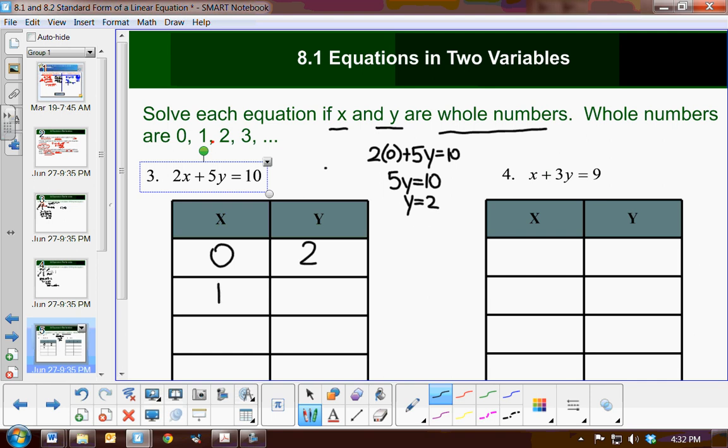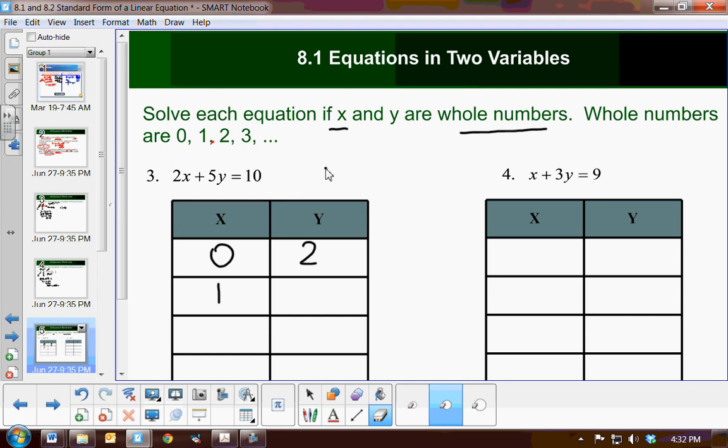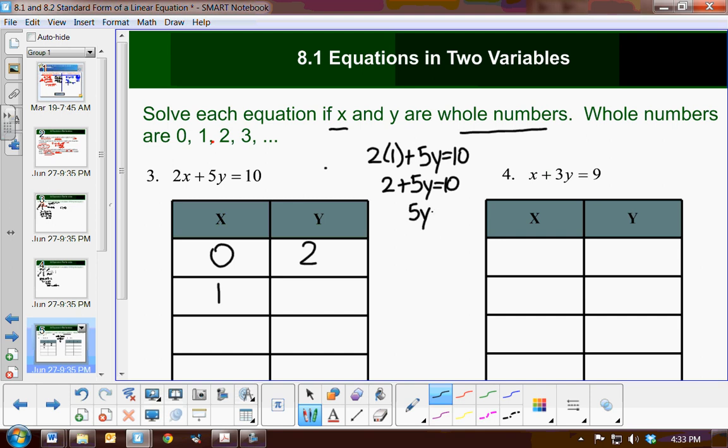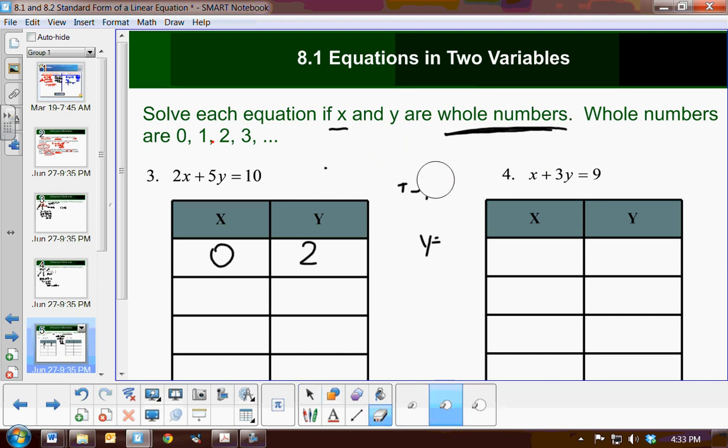Now let's check the next whole number, 1. Give myself some room to work. So now we have 2 times 1 plus 5 times y equals 10. Well, we have 2 plus 5y equals 10. Subtract 2 from both sides. 5y equals 8. But when I divide by 5, I get 8/5 for the value of y. Now, according to this direction, I want to find when x and y are whole numbers. 8/5 is not a whole number. So therefore, when x is 1, y is not a whole number. So this will not be a whole number solution to this equation.